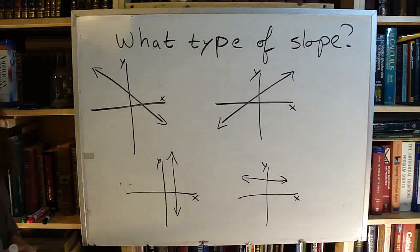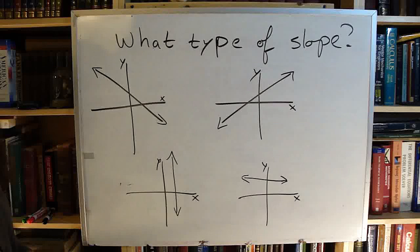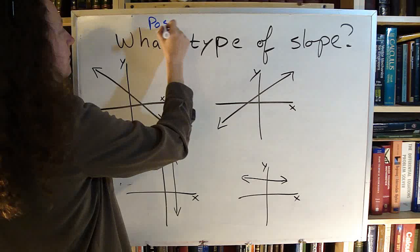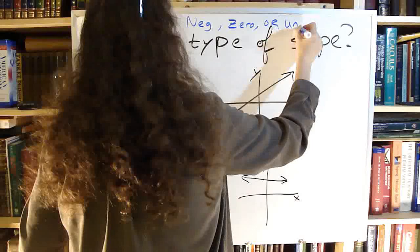What type of slope is this? Is it a positive slope, a negative slope, a zero slope, or an undefined slope? So our four options are positive, negative, zero, or undefined.